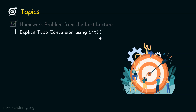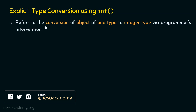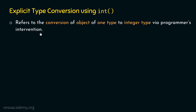Explicit type conversion using int refers to the conversion of an object of one type to integer type via programmer's intervention. This time, the programmer is involved. We are specifically talking about int() — with parentheses — which is a function with the ability to convert an object of one type to integer. The programmer has to use this int function. The syntax takes two arguments: value and base.